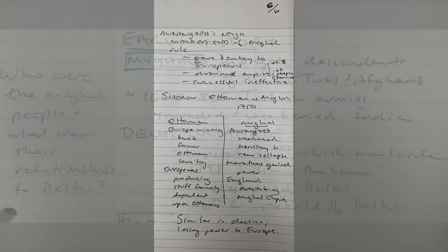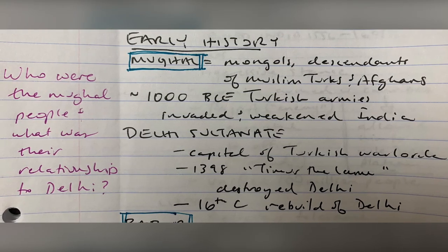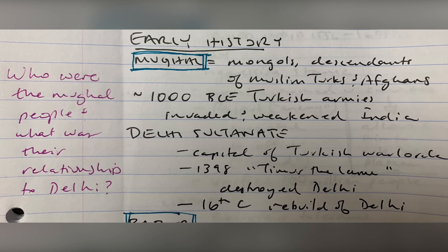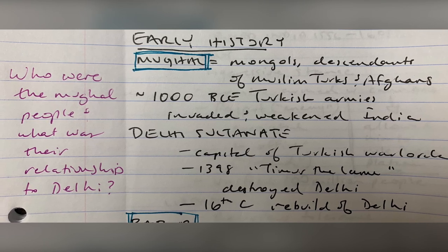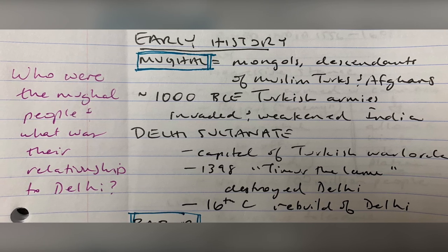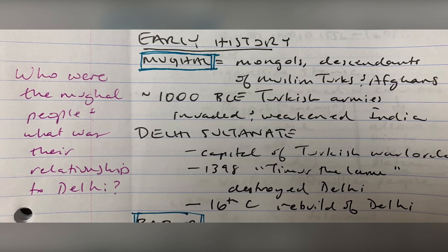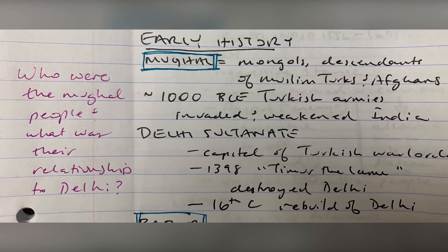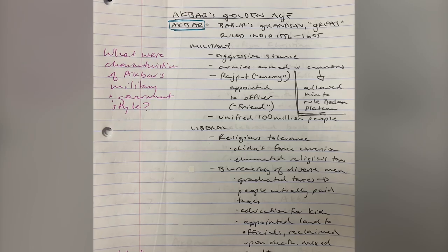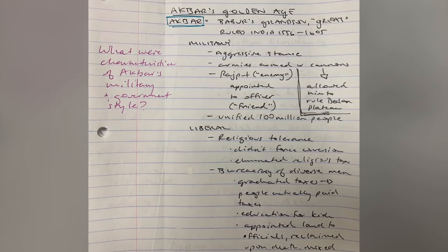When you've finished your reading assignment, go back and reread your notes. You're going to add questions to your Q column that are answered by the information in your notes. Consider questions like impact, cause and effect, or characteristics — the types of questions that might appear on a quiz.